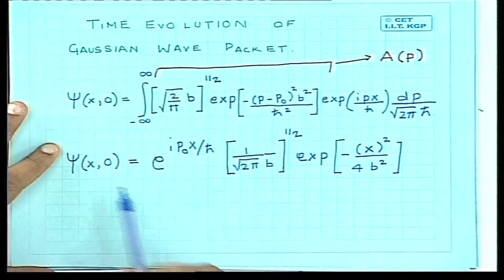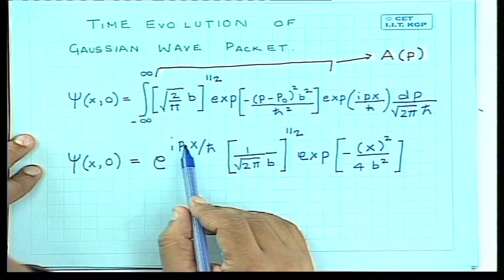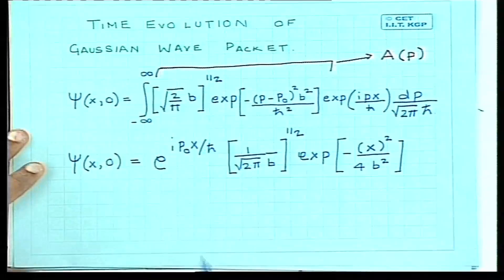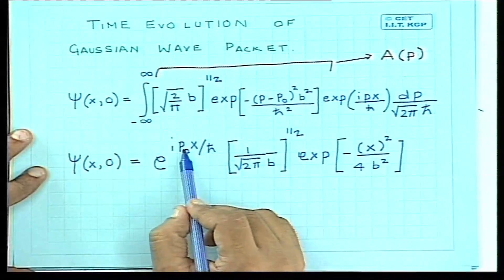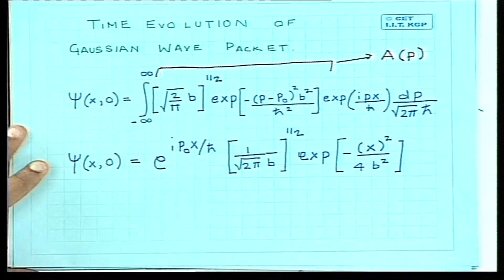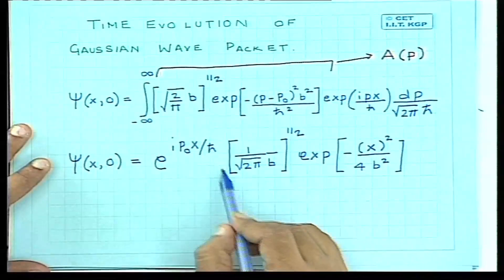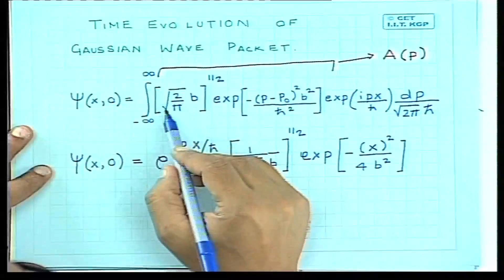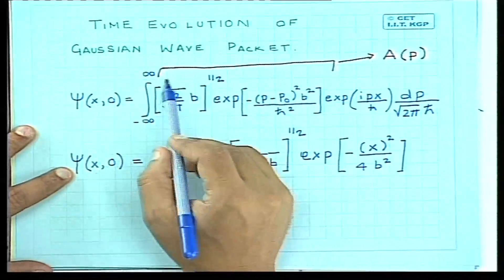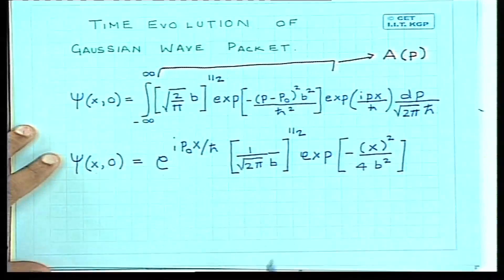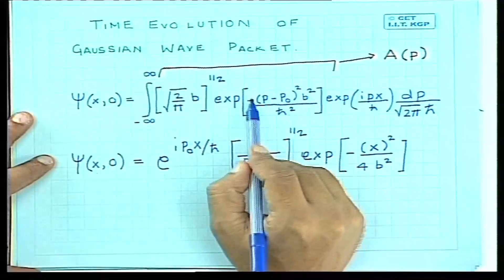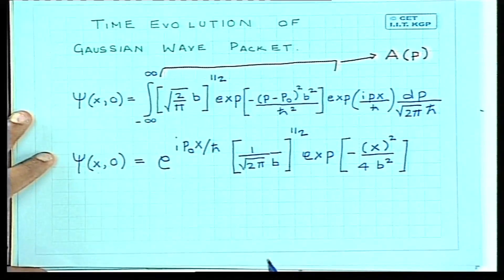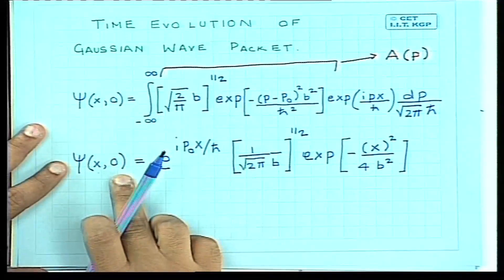The wave function corresponding to this wave packet has a factor e^(ip₀x/ℏ), indicating the particle has a mean momentum p₀ along the x-axis, with some spread in x quantified by b. Looking at the same wave packet in Fourier space as given by a(p), you can see it also has a spread in momentum.